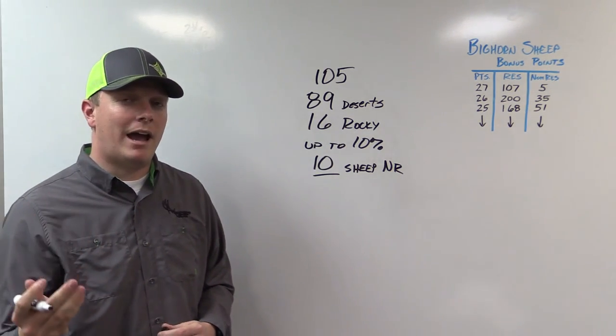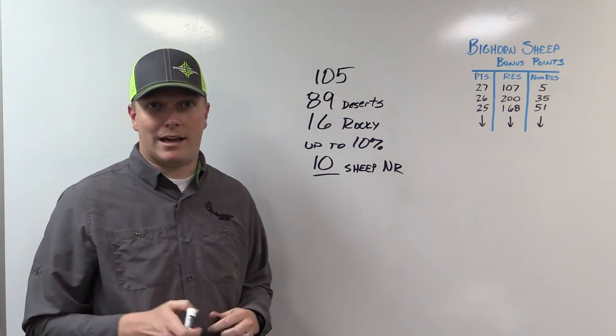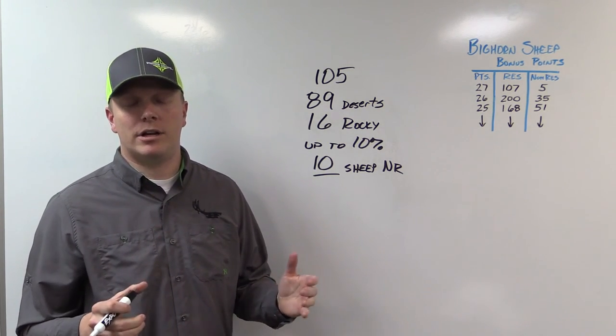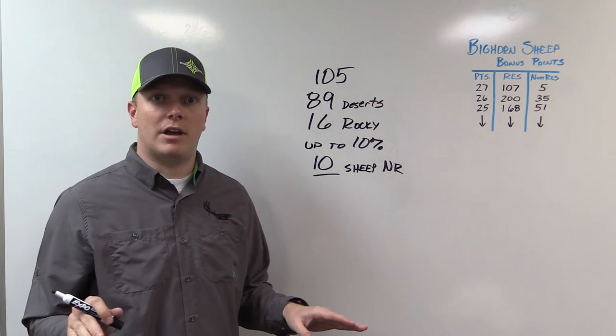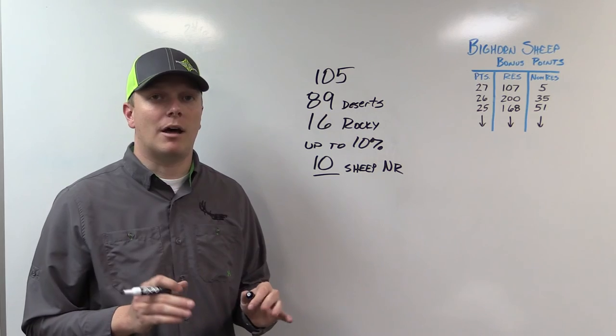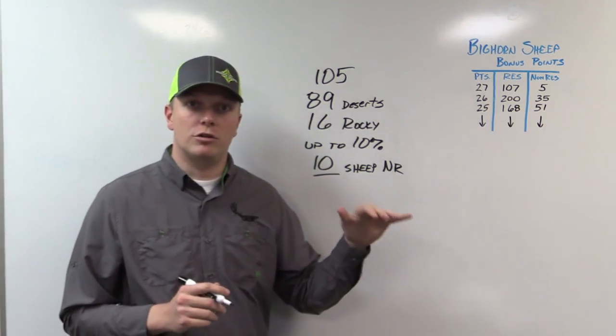So you have to look at hunts that have more than one tag available. A unit that only has one tag available is not available for non-residents. So you will not be able to apply for that. You need to look for the hunts that have two or more.